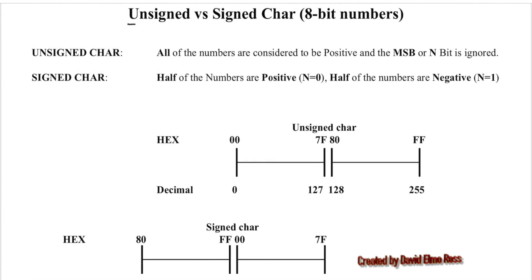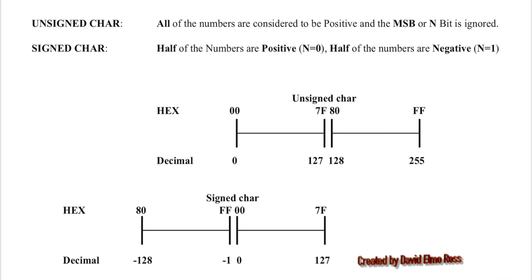We have two different number systems: unsigned and signed. We have unsigned and signed char, unsigned and signed short. For unsigned and signed char, these deal with 8-bit numbers.